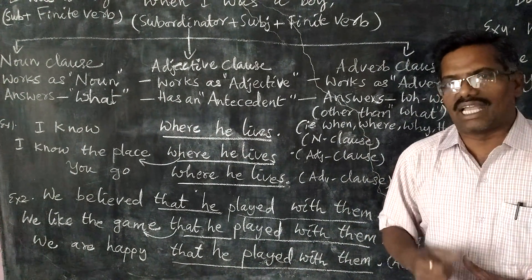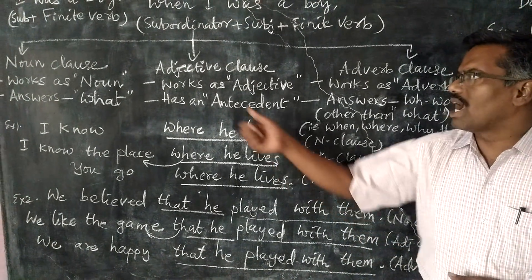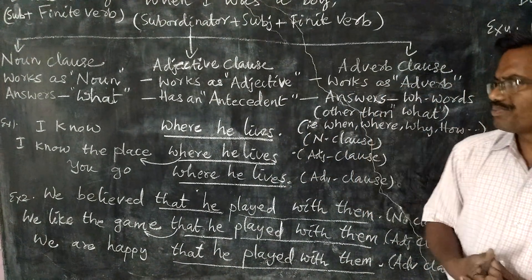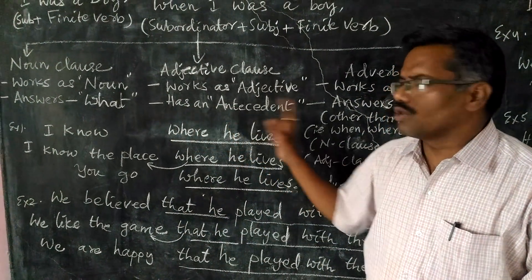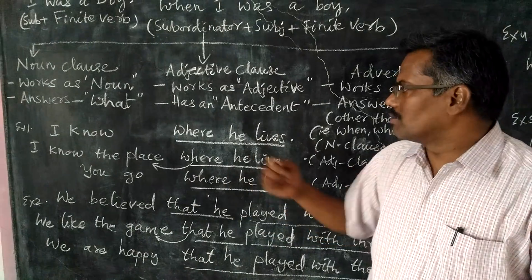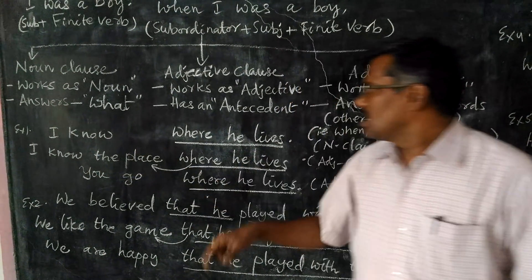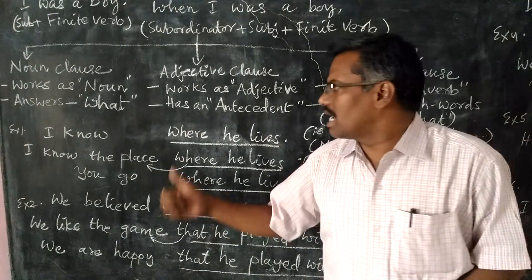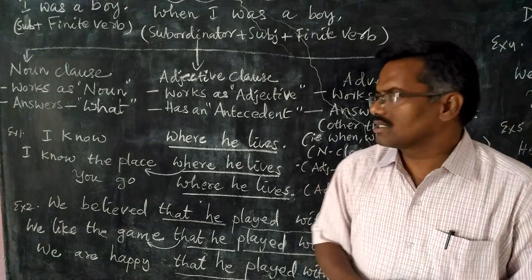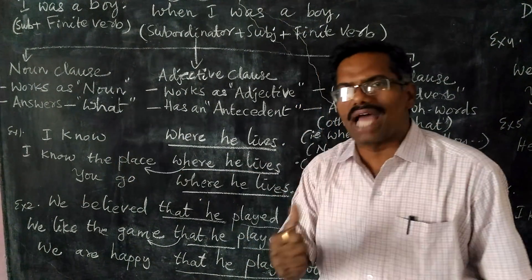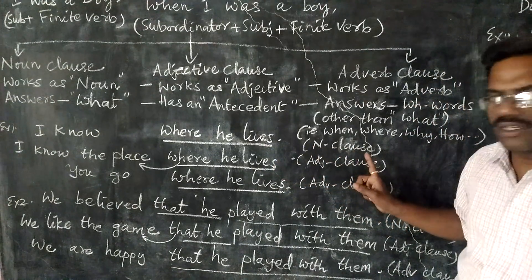If you make the children know about these three points, they will feel very comfortable to identify these three clauses. Let us see in the examples how these rules work. Example number one: 'I know where he lives.' Here, this clause answers the question word 'what' — I know what? The answer is 'where he lives.' So it is called noun clause.